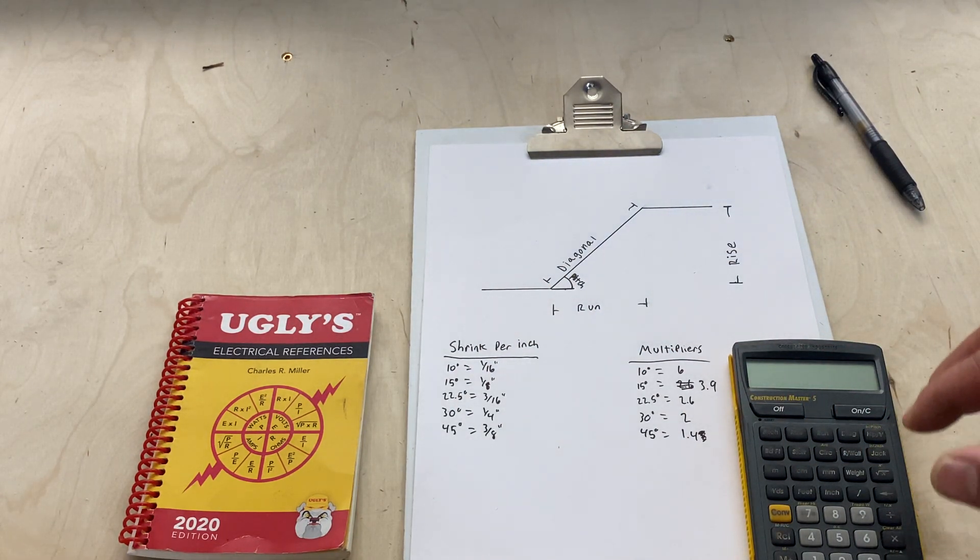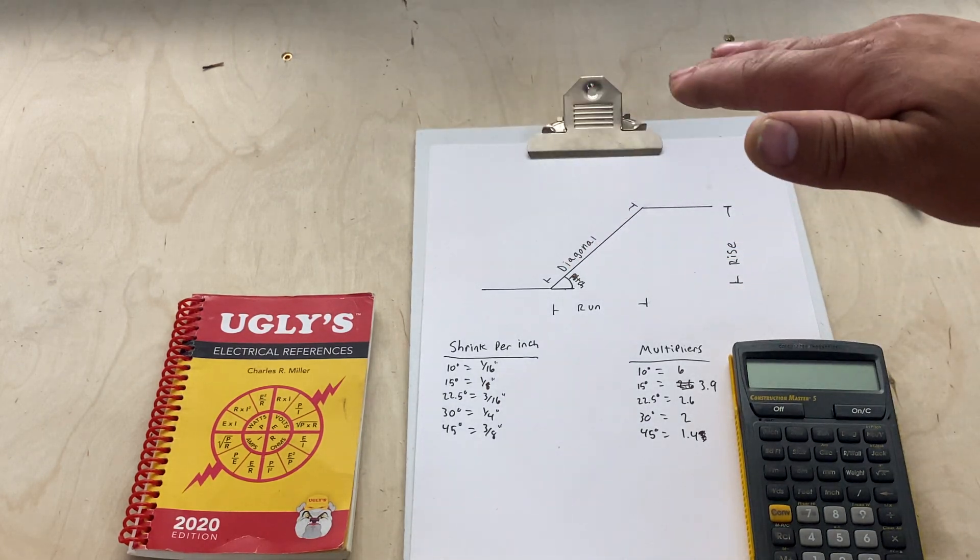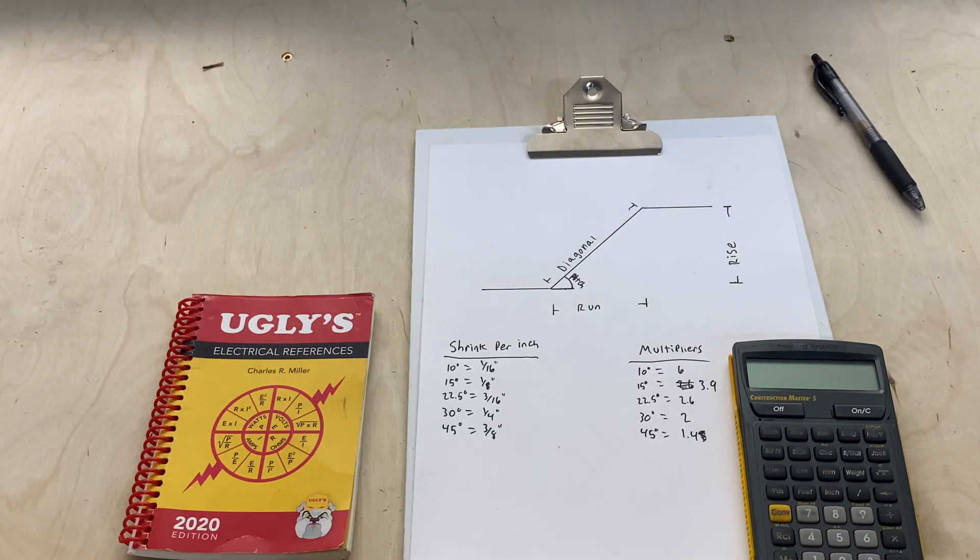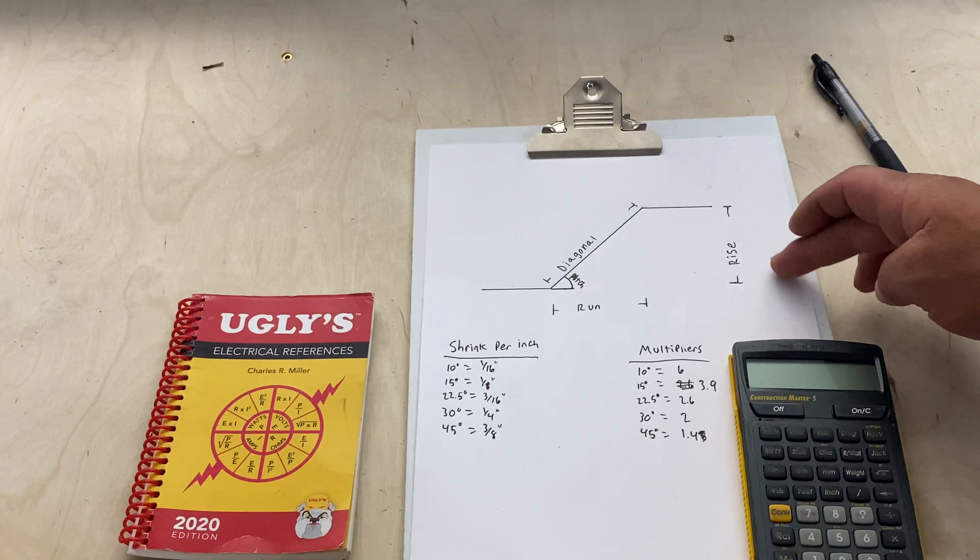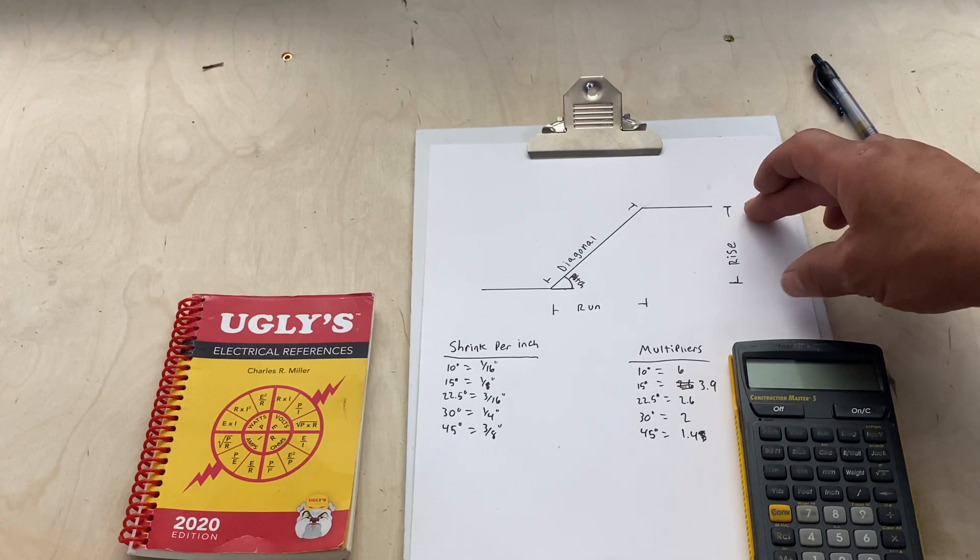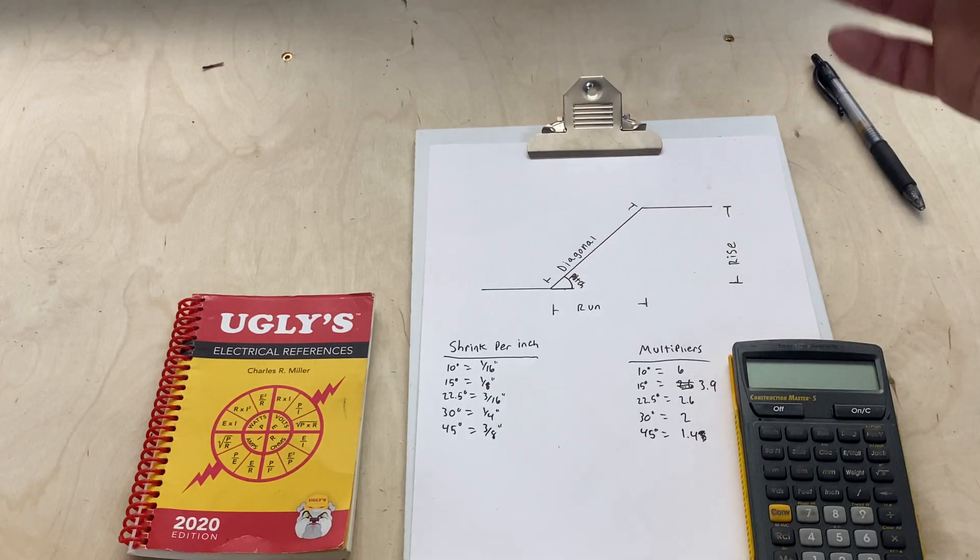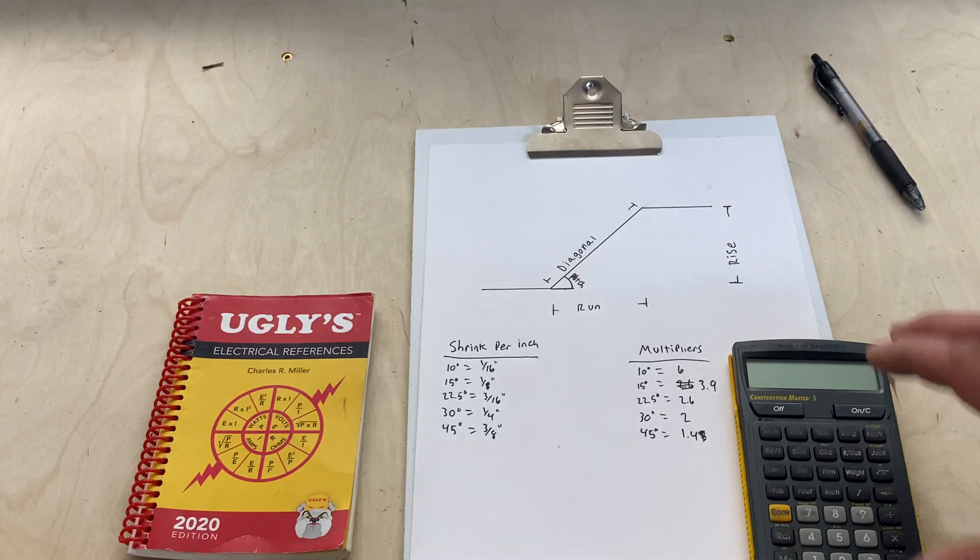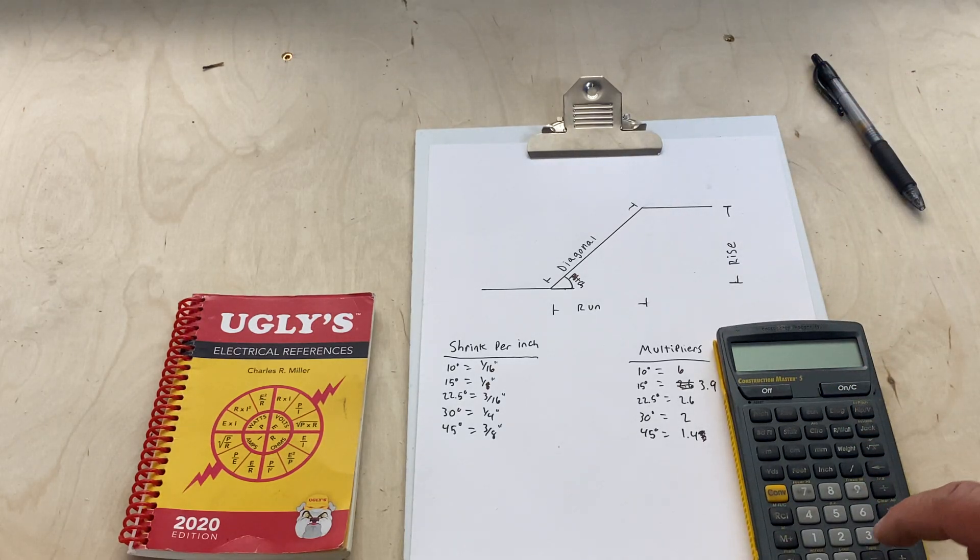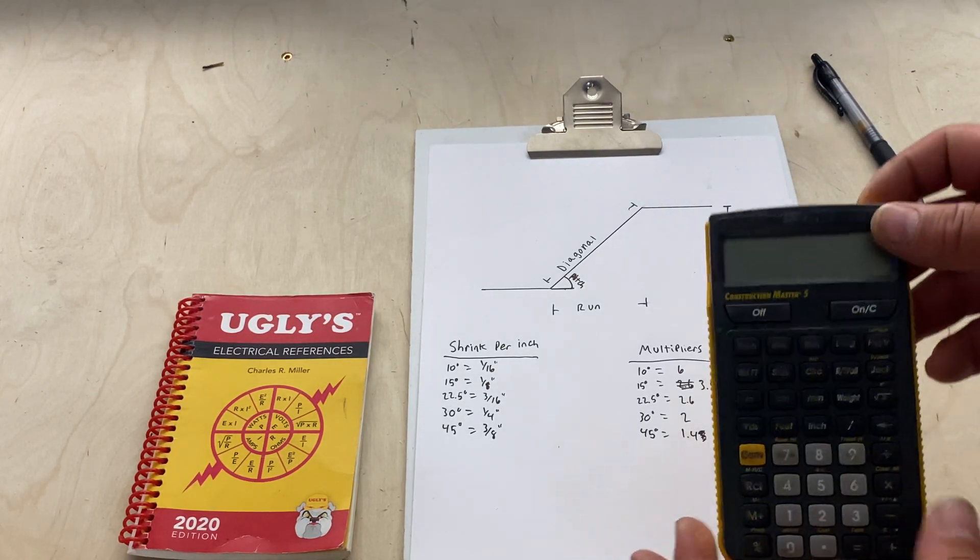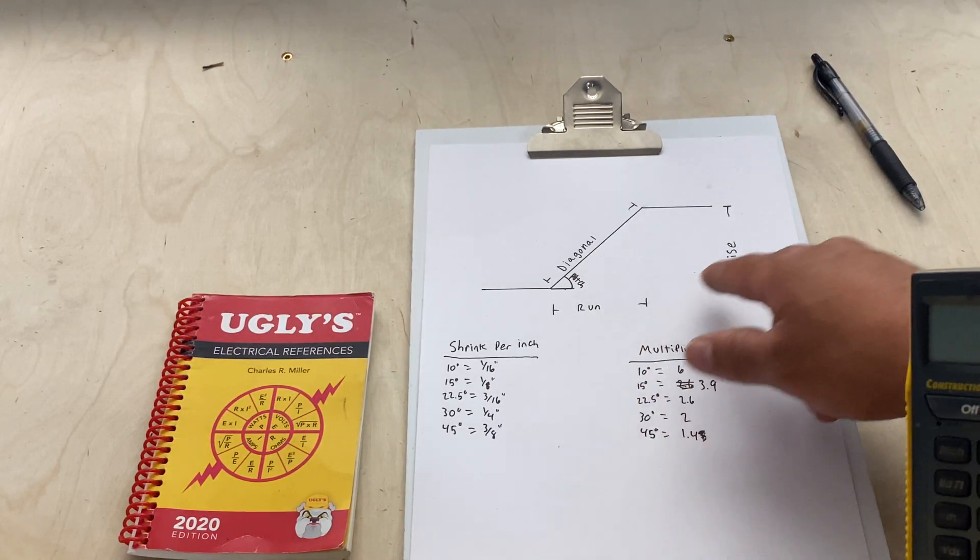Let's say we're doing a four-inch offset. Let's say we have a 1900 box on the wall and we have to offset around this box. A 1900 box is four inches, give or take a sixteenth or an eighth, so four-inch box, four-inch rise.